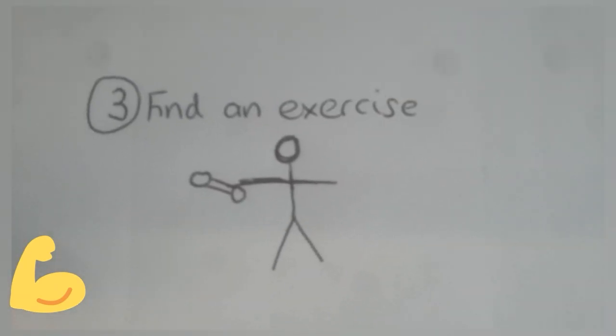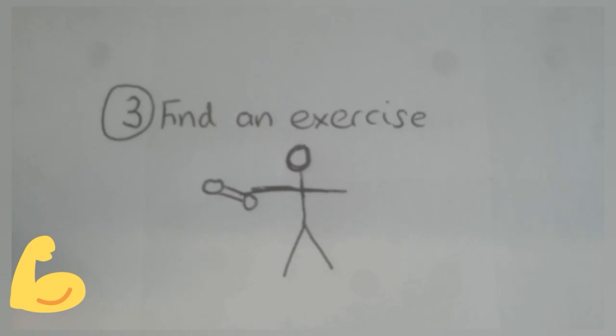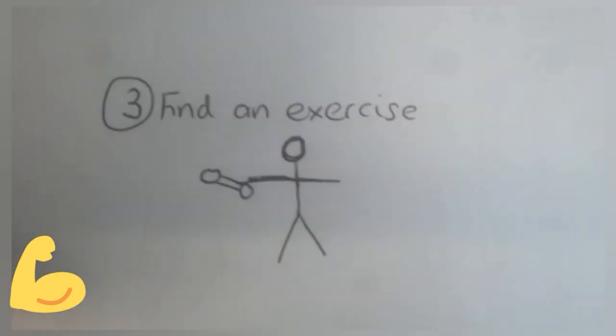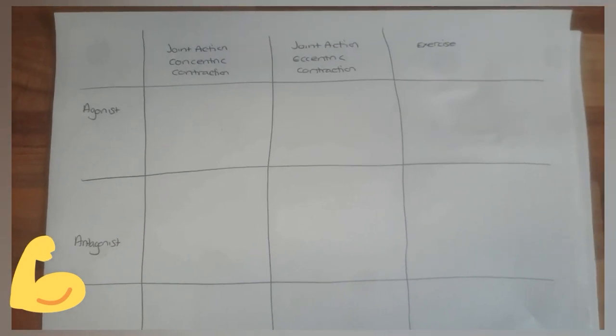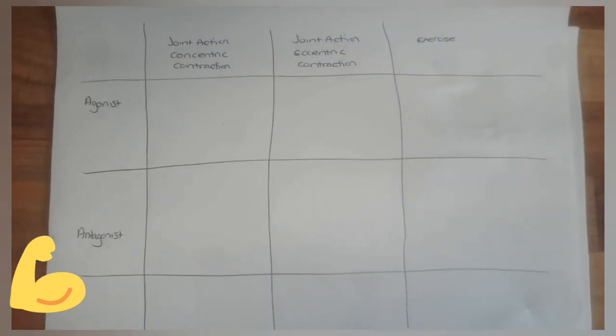Then step three is about finding the exercise that works that same muscle and creates that joint action to change. So that's it in brief. Now let's go through with a quick example.